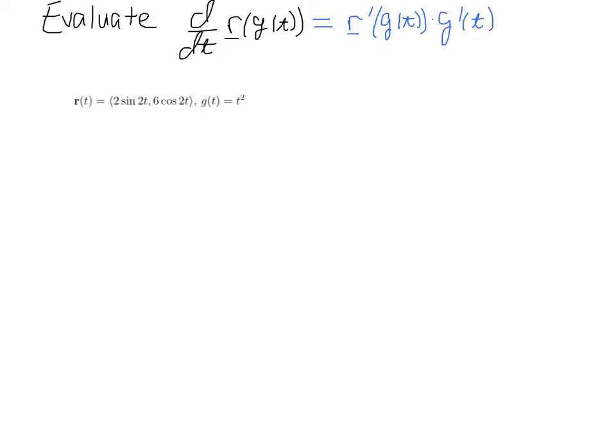So since we have to take derivatives of the path r of t and the scalar function, I'm just going to proceed with computing r' of t straight away and then I'll evaluate it at g of t.